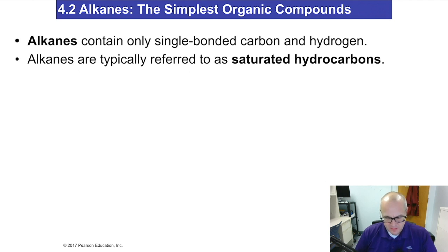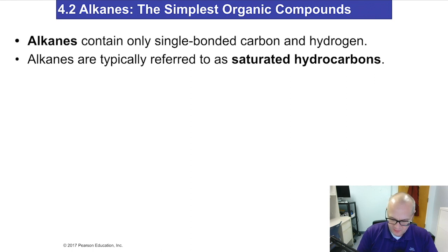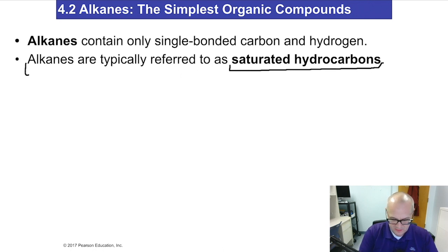Alkanes are a family or a class of organic compounds, and they contain carbon and hydrogen only. They're known as hydrocarbons. Hydrocarbons contain carbon and hydrogen only, and they are referred to as saturated hydrocarbons. Saturated hydrocarbons have carbon-carbon single bonds only, and they're known as alkanes.